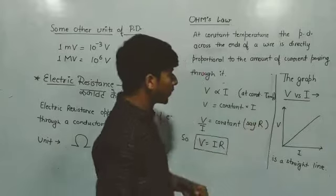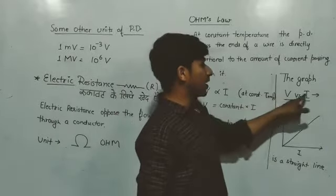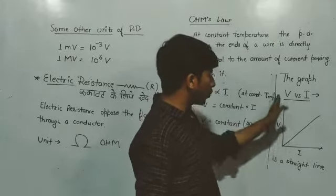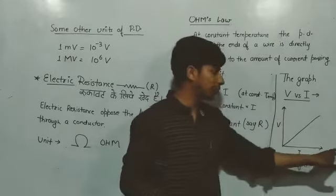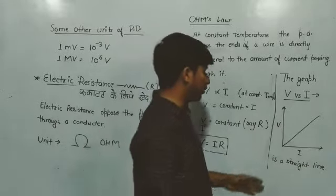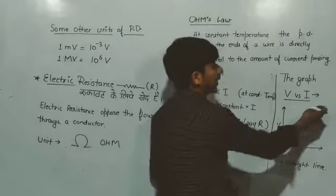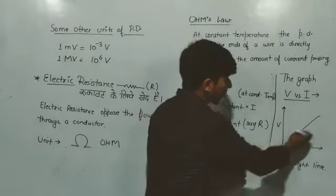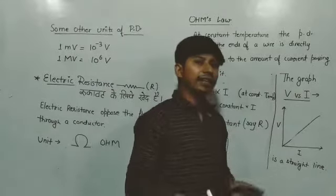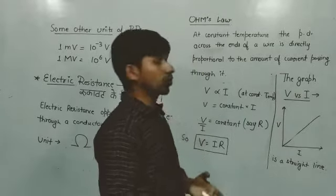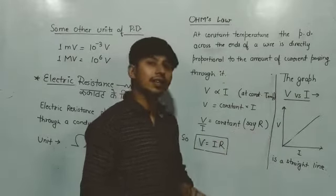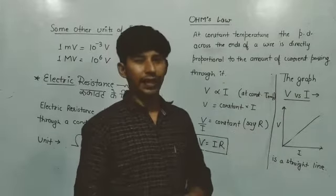We have taken V on the y-axis and I on the x-axis. When we plot the graph, we will get a straight line. This is showing that V or I ka ratio hamesha constant rahta hai, and that constant is named as R, R means resistance. So what is actually the resistance?